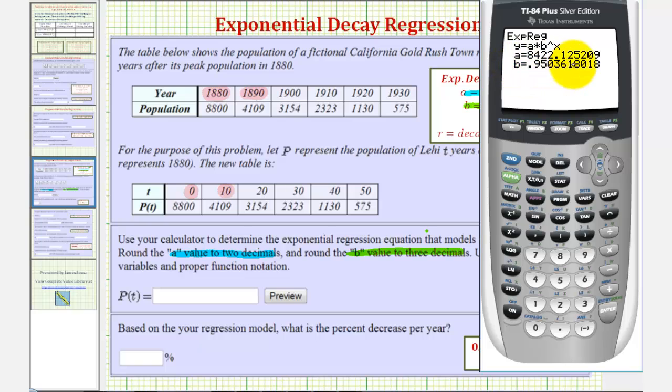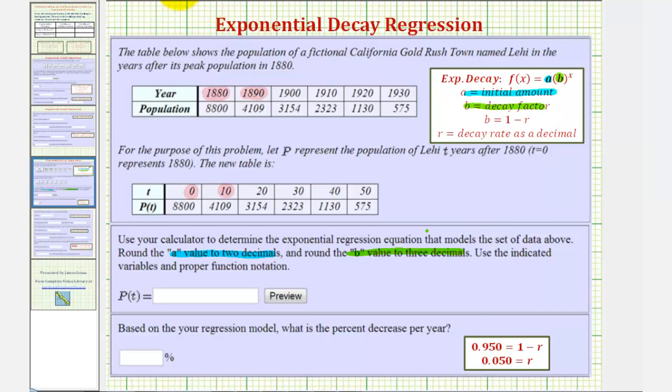So A to two decimal places would be 8,422.13, and B to three decimal places would be 0.950. Which means our exponential model would be 8,422.13 times 0.950 raised to the power of t. The variable here does have to be t, because p is a function of t.